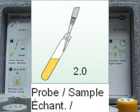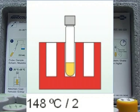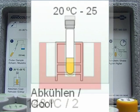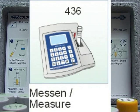Add the sample, mix the tube contents, into the heating block for 2 hours, out of the heating block to cool, then measure.